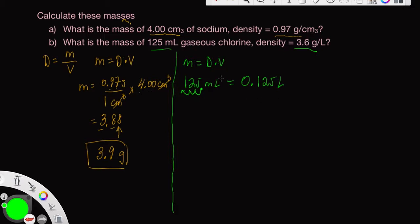So now we can use the equation that we have up above. Mass is equal to density, 3.6 grams per liter, times the volume. And the liters cancels.